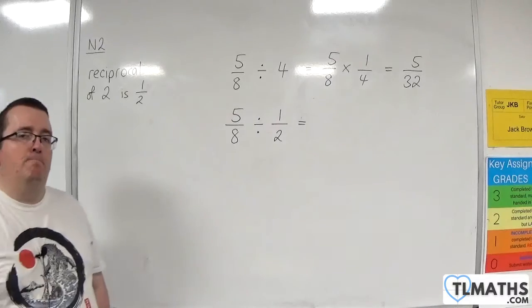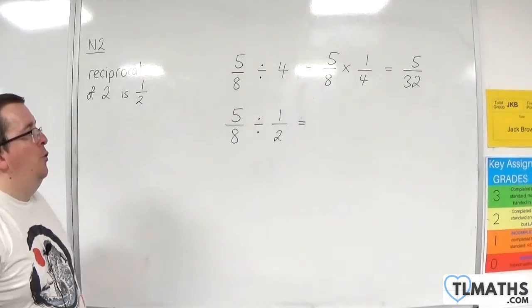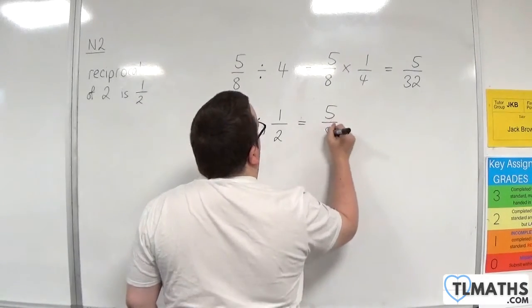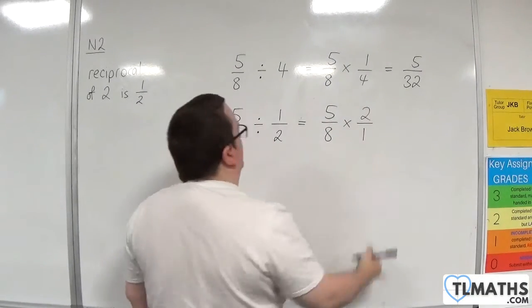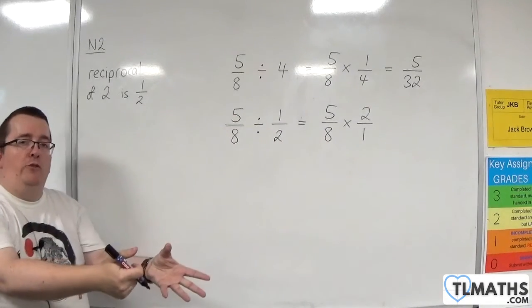So I must multiply by the reciprocal, which is 2 over 1. The reciprocal of a fraction is just swapping the numerator and denominator.